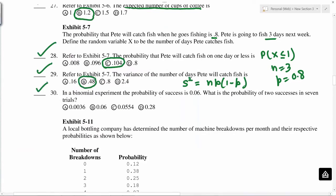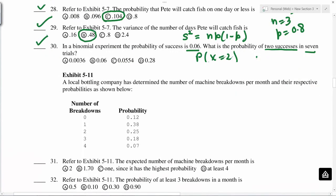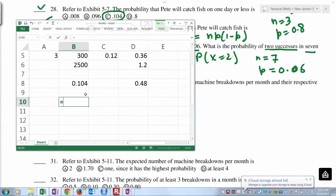So in binomial experiment, p is 0.06. What is the probability of 2 successes in 7 trials? Probability of x equals 2, where n is 7 and p is 0.06. So once again, binomial distribution.